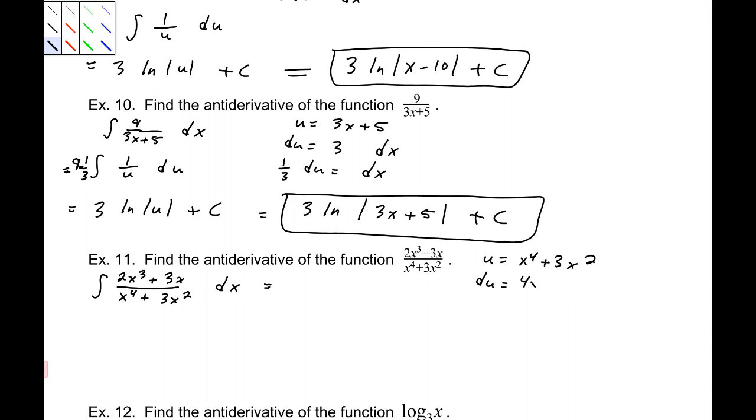Okay, that helps. So, this would be 4x cubed plus 6x dx. Now, that does not look like what I have in my numerator. However, it differs by a factor of 2. So, if I divide everything by 2 here, or, in essence, make this 1 half du, that is 2x cubed plus 3x dx, which is what I want.